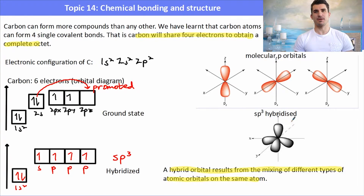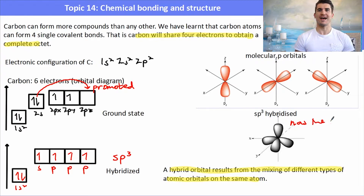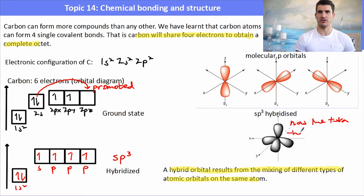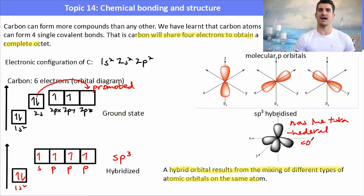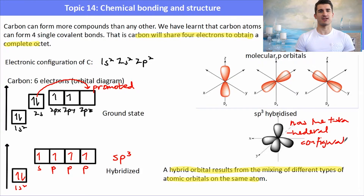An SP3 hybridized orbital has the tetrahedral configuration. So any time we have an SP3 hybridization, that means the carbon has four bonds and it will always have the tetrahedral configuration.